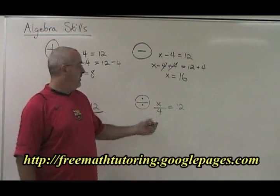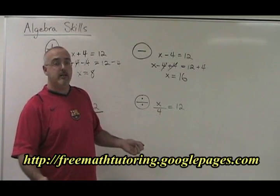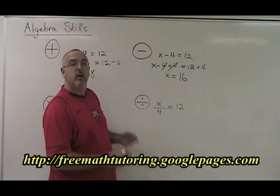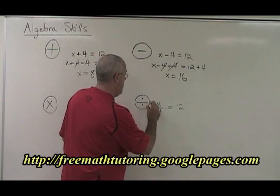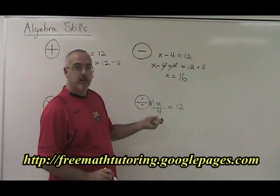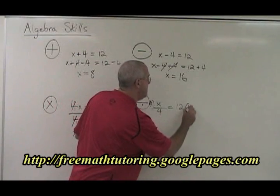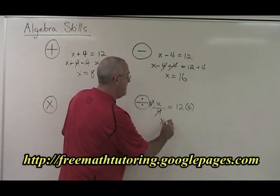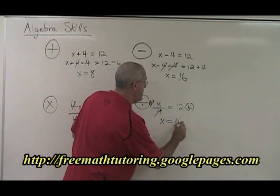Division: x divided by 4 equals 12. What is x? If I am dividing my x by 4, I want to do the opposite. I want to multiply it by 4. So we multiply 4 by that left side. If we're multiplying the left side by 4, we have to multiply the right side by 4. These cancel. x is now isolated and is equal to 12 times 4, which is 48.